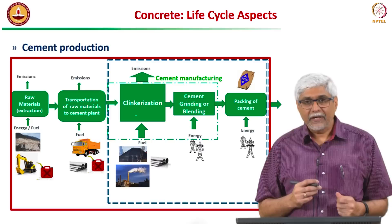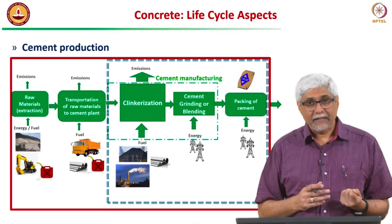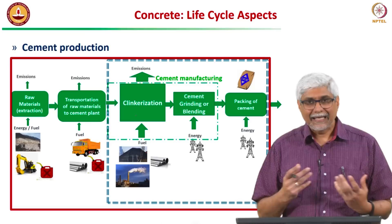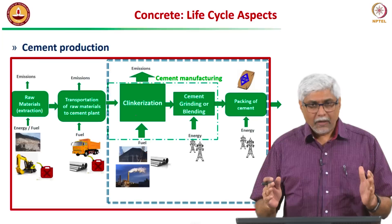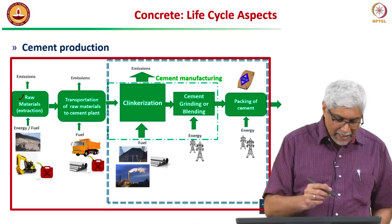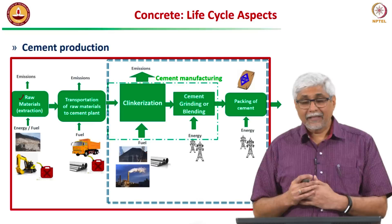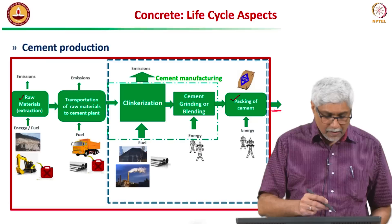When we talk about concrete, we first have to think about cement — it is the component with the most environmental impact. We said before that 5% of the world's CO2 emissions come from cement. The cement production process shown on screen covers all processes starting from raw material extraction — getting the raw materials which will make the clinker — all the way to the packing and delivery of the cement.